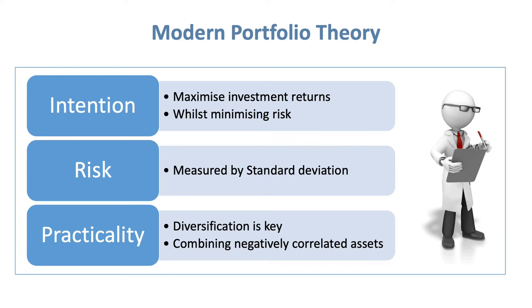We can also measure diversification within MPT. The measure of the effectiveness of diversification is the correlation that exists between two assets. We're going to be looking very closely at standard deviation and correlation as two of the main protagonists.